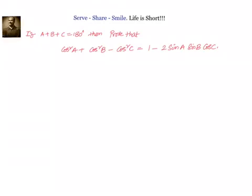Hello friends, welcome back, hearty welcome to you. Let us look at this problem. If A plus B plus C equal to 180 degrees, or if A, B, C are angles of a triangle, then prove that cos square A plus cos square B minus cos square C equal to 1 minus 2 sin A sin B cos C.